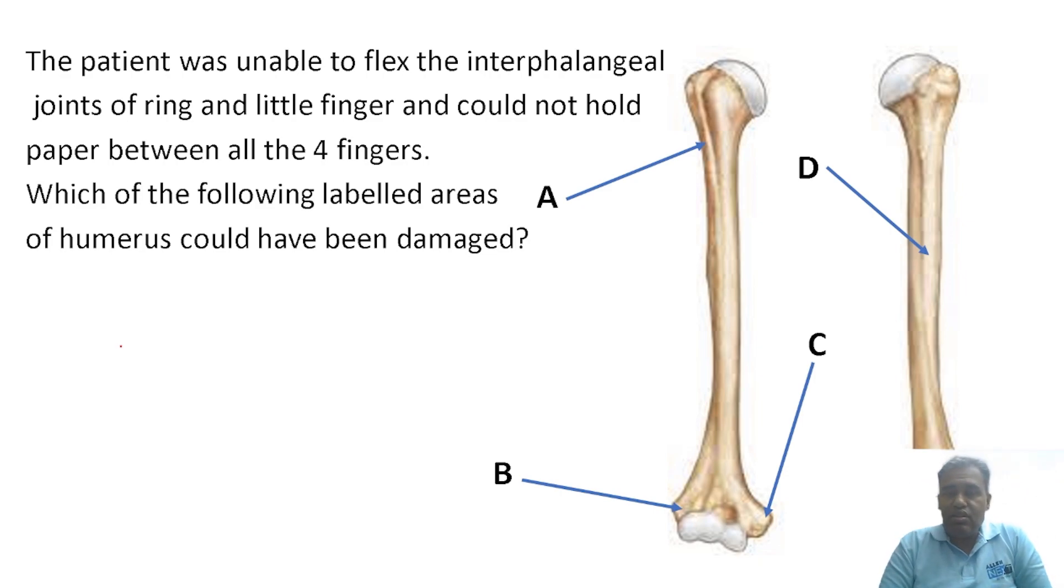They're not asking about which nerve, they're asking which labeled area could have been damaged. Look at the humerus - there's an anterior view and posterior view. Point A is pointing towards the surgical neck of humerus, where a very important nerve lies: the axillary nerve.